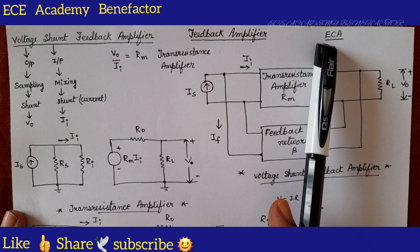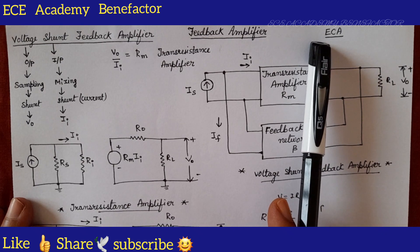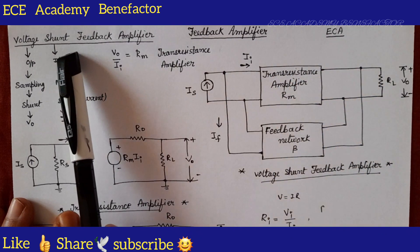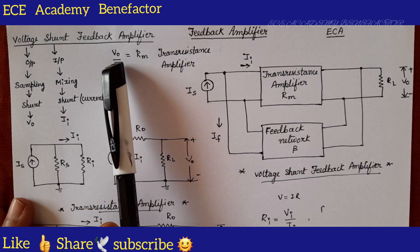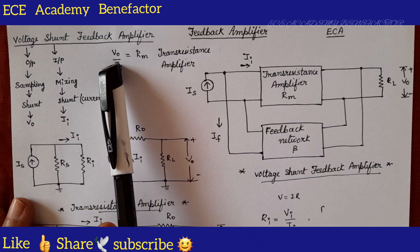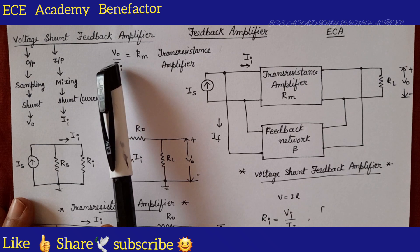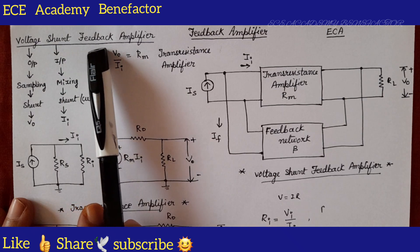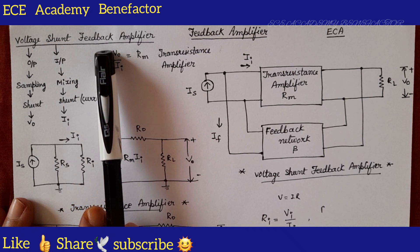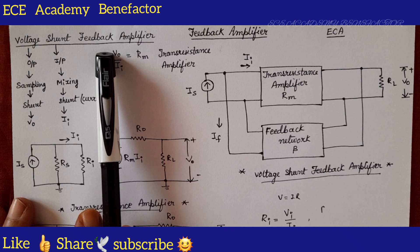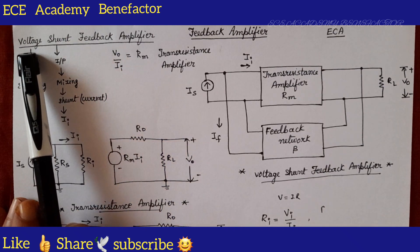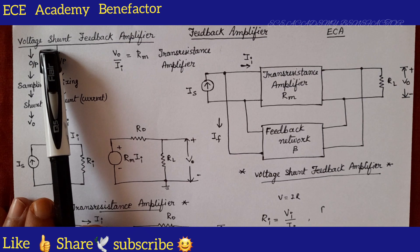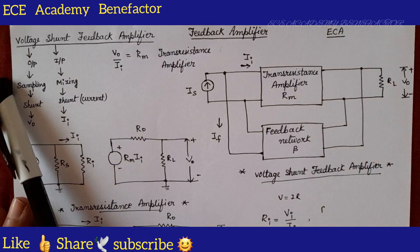To derive RIF we need to first draw the block diagram of voltage shunt feedback amplifier. After drawing the block diagram we need to know the equivalent circuit of the basic amplifier, and then we have to draw the voltage shunt feedback amplifier equivalent circuit. Based on the name we can draw the basic amplifier and the block diagram.